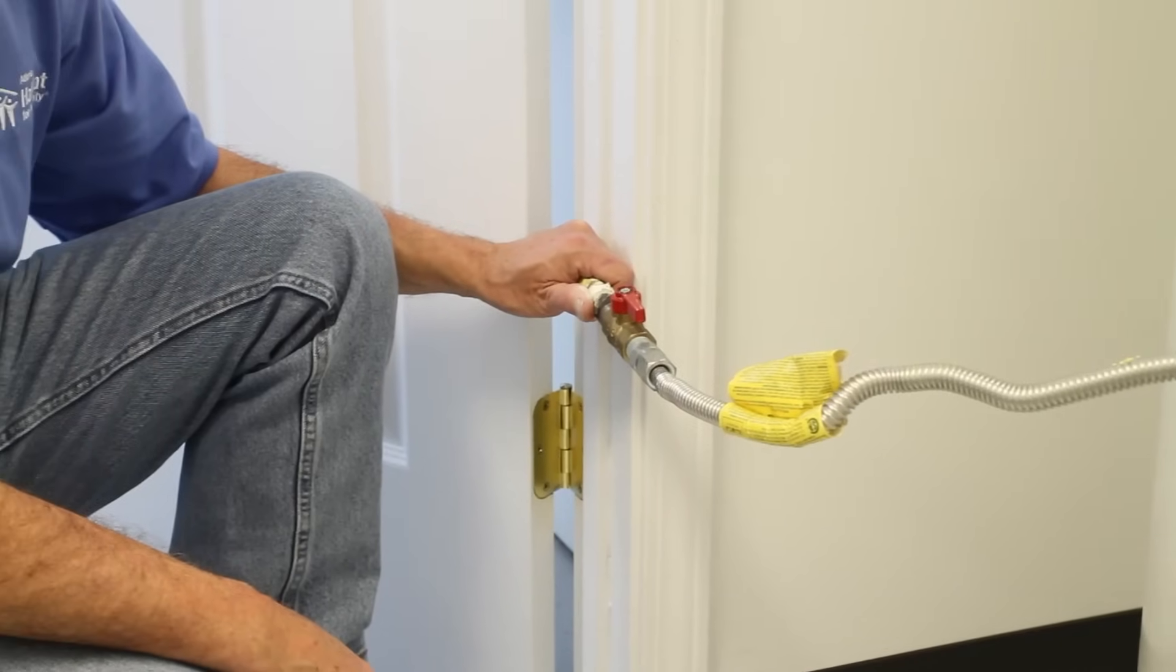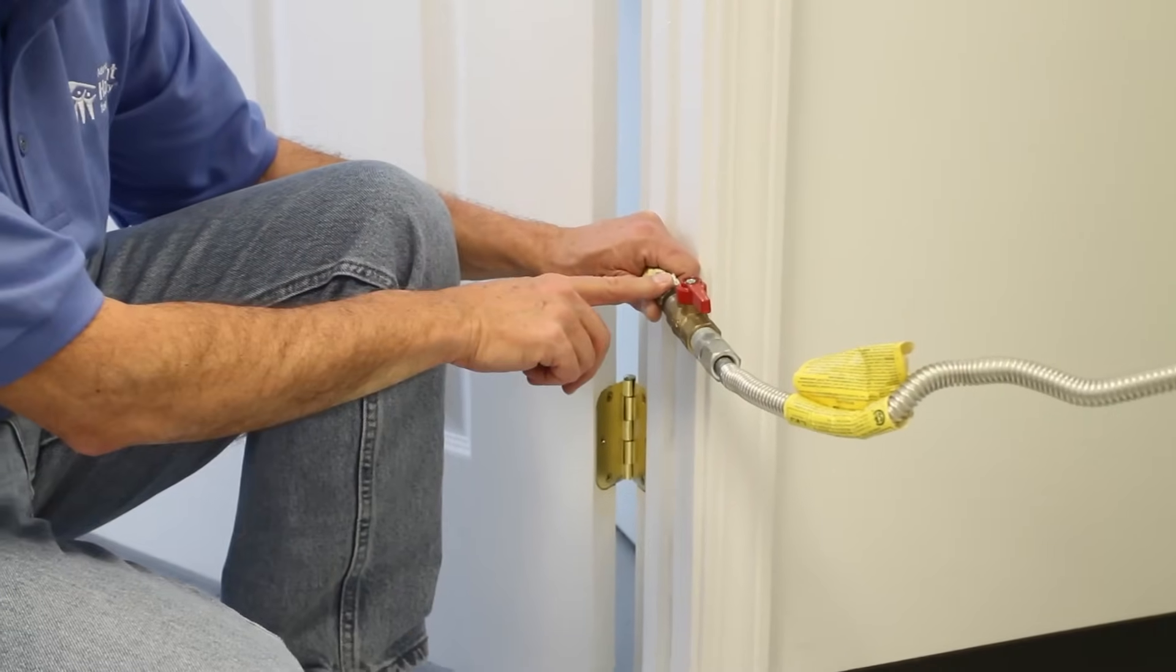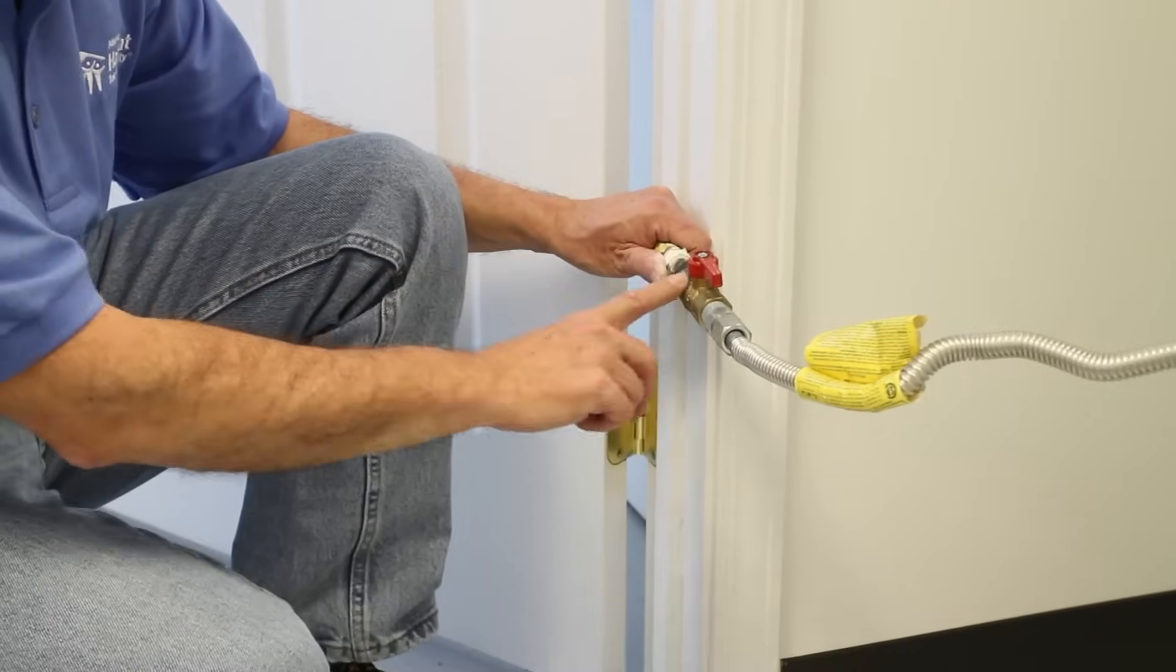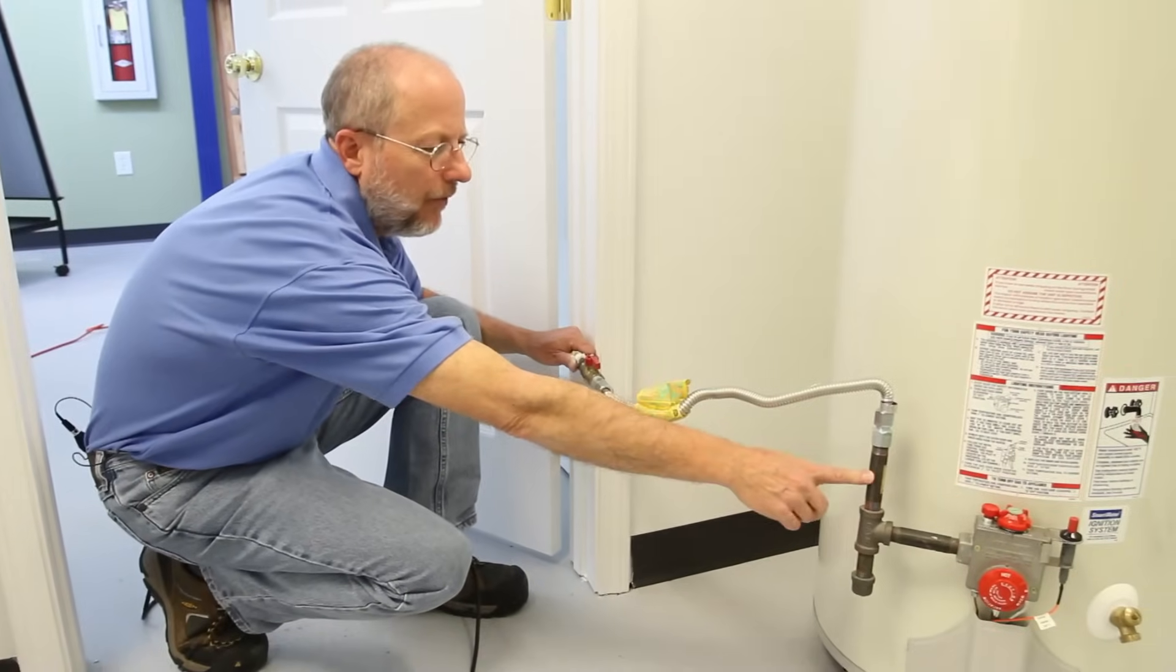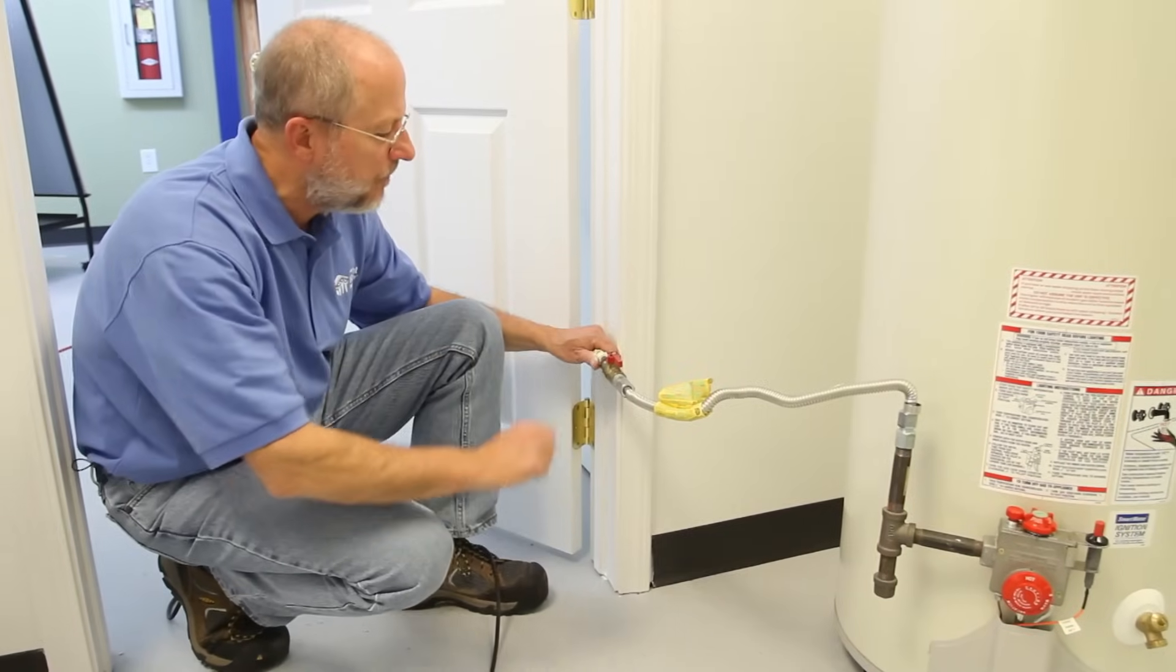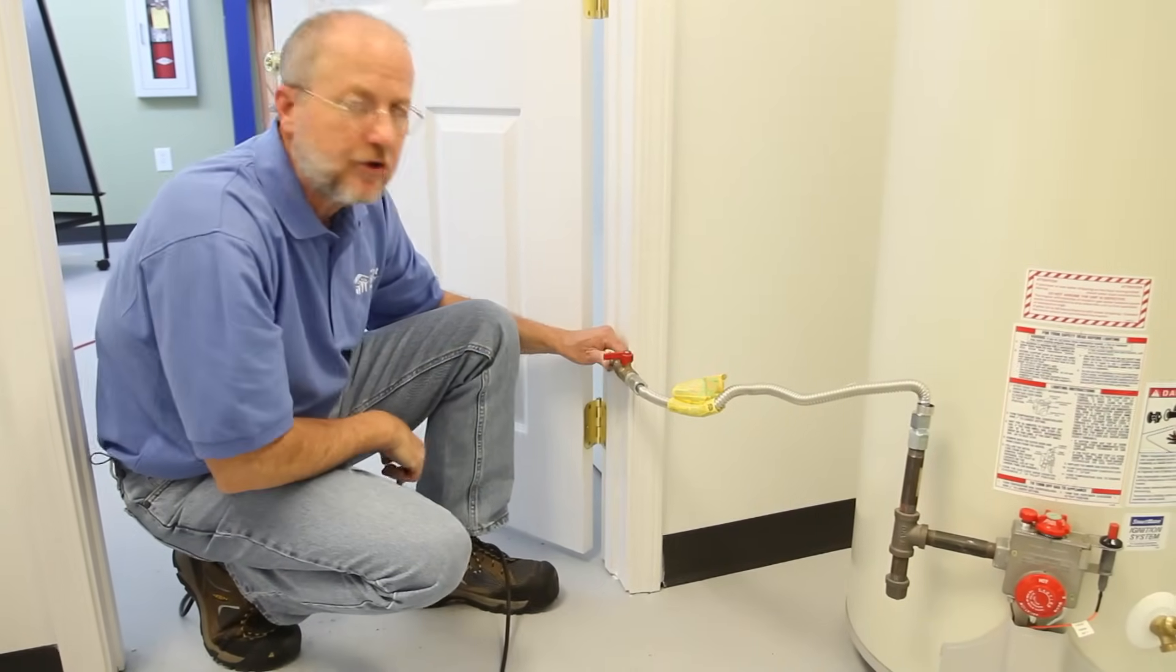If your hot water heater is gas fired, you will have a supply coming out of the wall and a flexible hose connection to the burner mechanism. And this here is simply the shutoff valve.